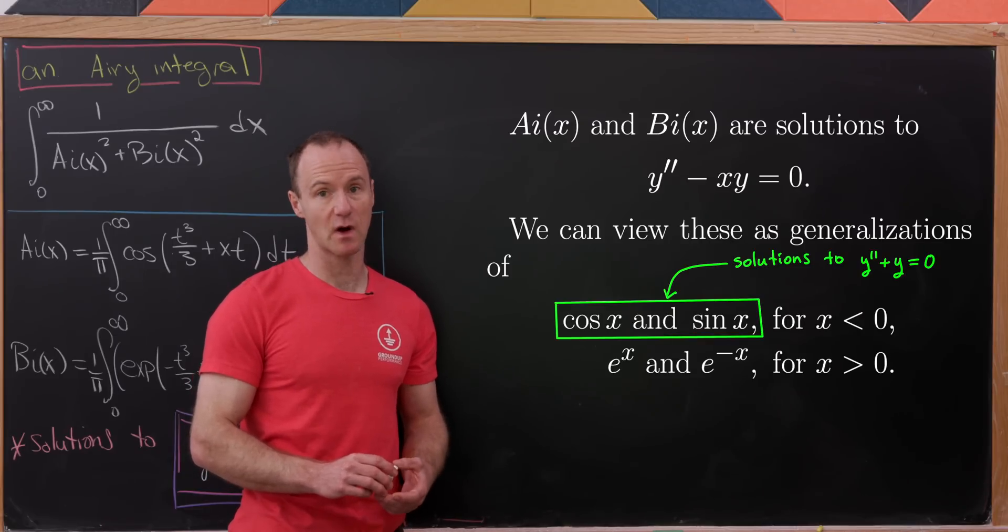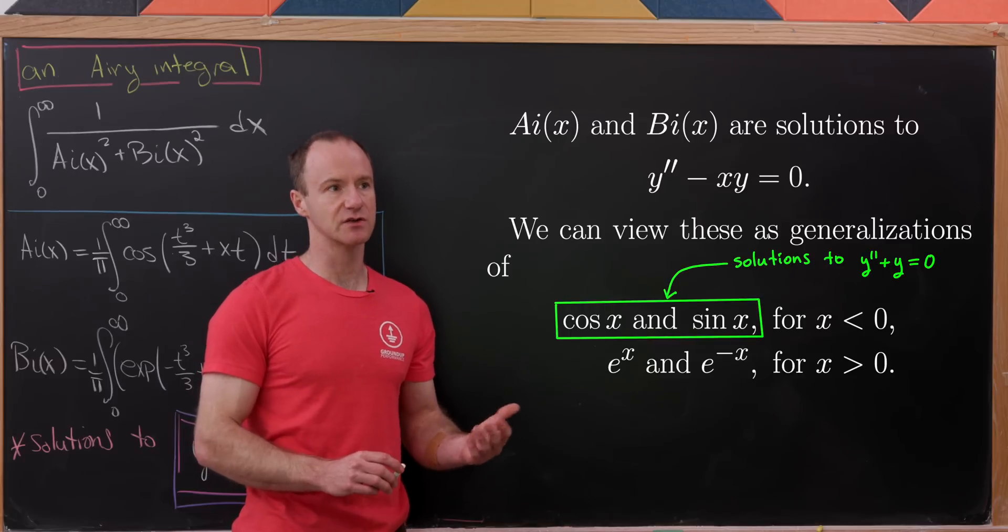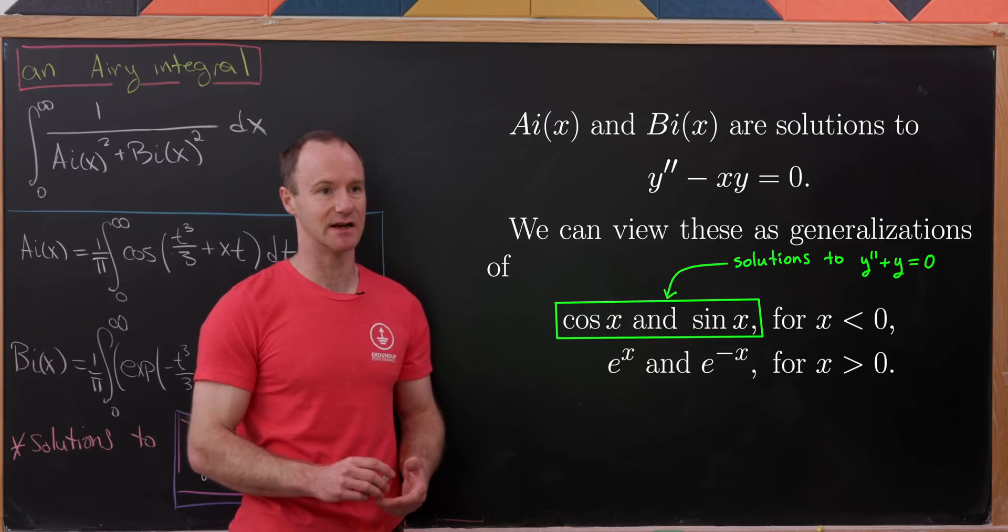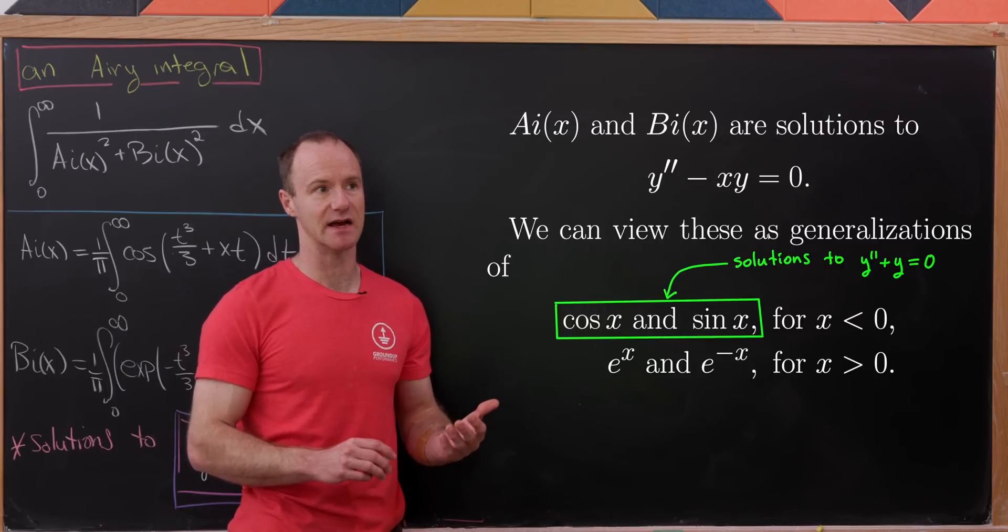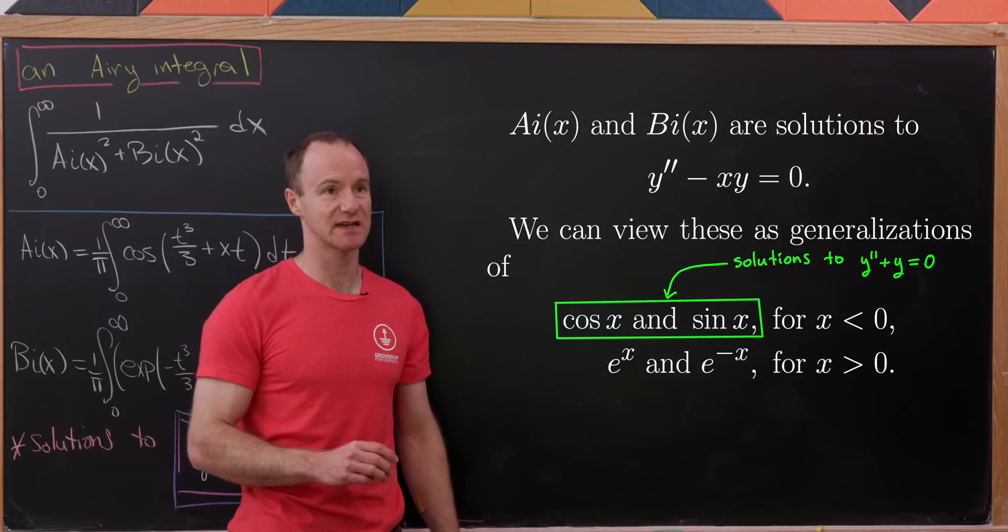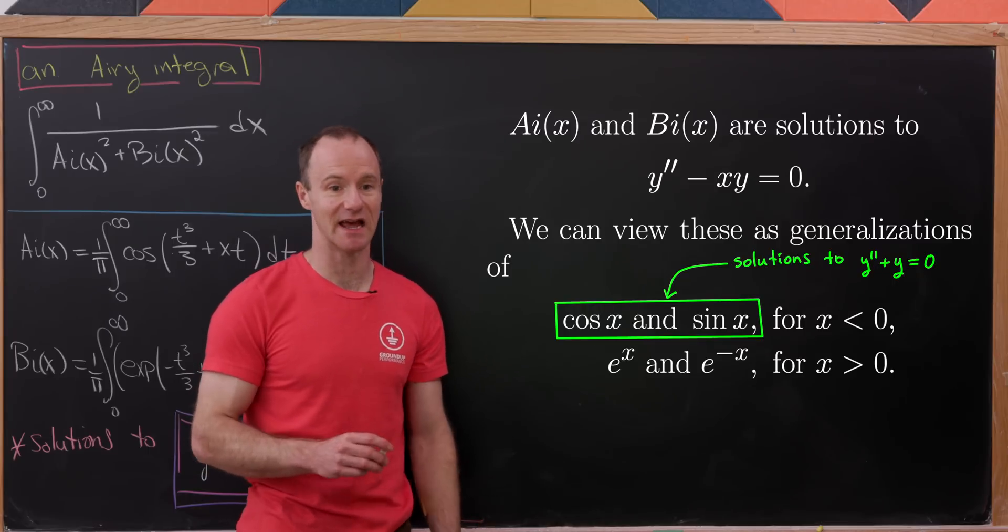And that differential equation looks pretty similar to some other differential equations which have well-known solutions. So for y double prime plus y equals 0, you would get solutions of cosine and sine. And so you can really think about the functions AI and BI as being a generalization of cosine and sine in the region where x is negative.